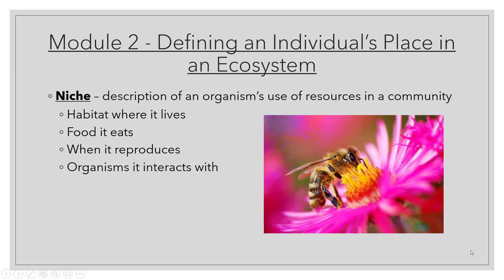Before we can talk about relationships, let's talk about individual organisms. The first thing you need to know is what a niche is — a description of an organism's use of resources in a community: habitat, food, reproduction, and the organisms it interacts with. If you look at this bee with a flower, you can see that's its habitat, that's also what it eats, and it's interacting with that flower.